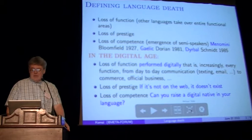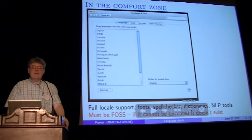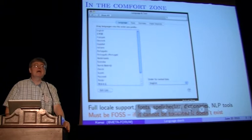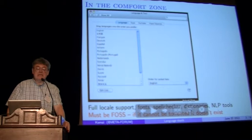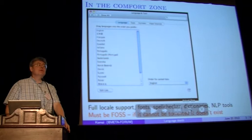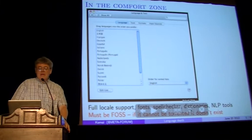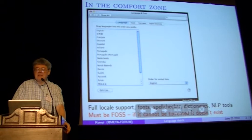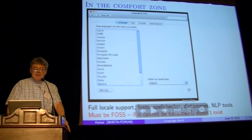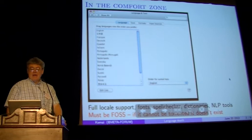I divide the languages into four categories. At the top you find a comfort zone — everybody in this audience who has a Mac can go into the language support page and this is what you get: a list of 16 languages. If Cupertino decides to support you, you're sitting pretty. If not, you still have some ways to go. You need full locale support, fonts, spell checkers, dictionaries, natural language processing tools — and all of these things must be free and open source software. If it cannot be torrented, it doesn't exist.